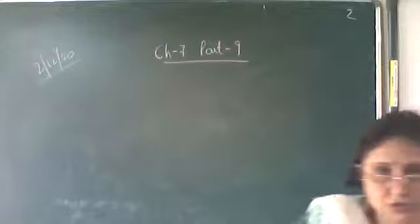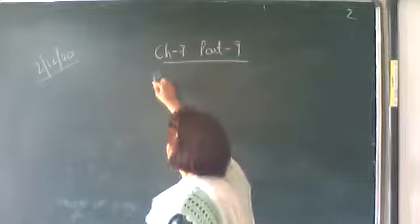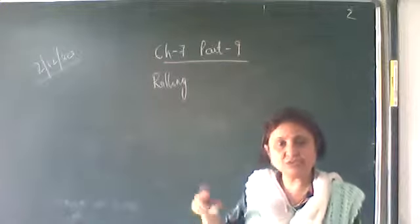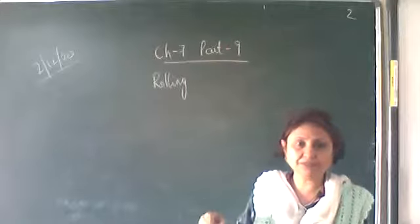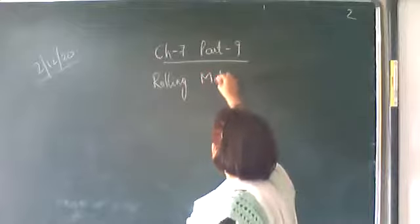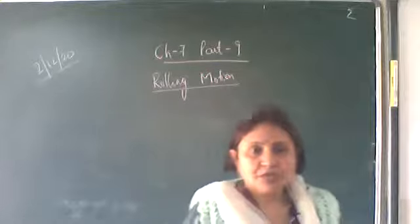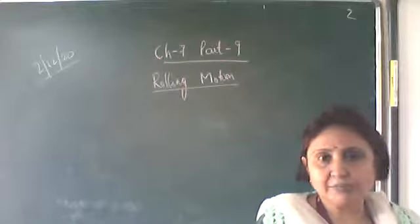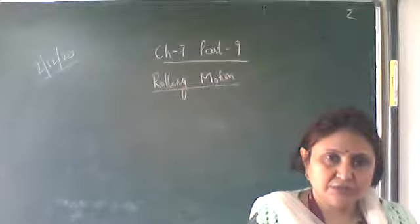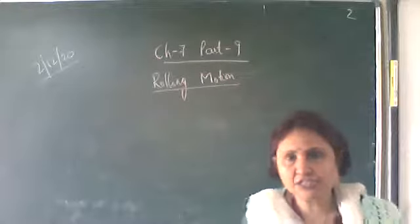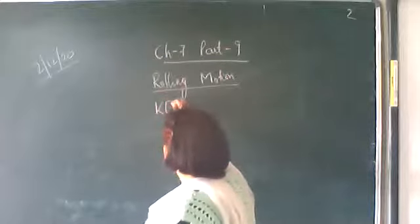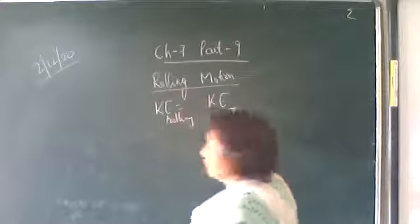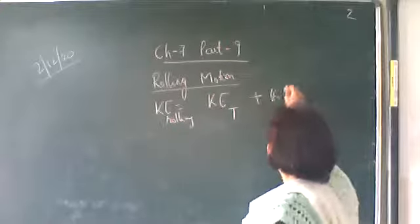We are discussing rolling motion. Rolling motion is when the body is moving forward — the center of mass is moving in a straight line — as well as the rest of the particles are rotating above the fixed axis of rotation. In rolling motion, the body is both moving forward and rotating, so the kinetic energy is the sum of translational kinetic energy and rotational kinetic energy.